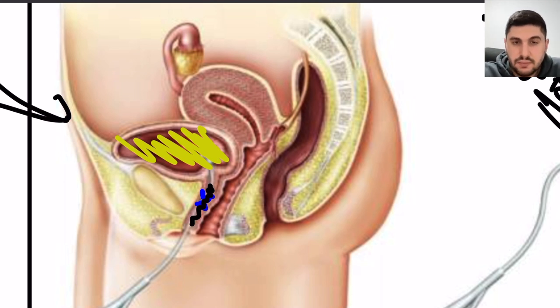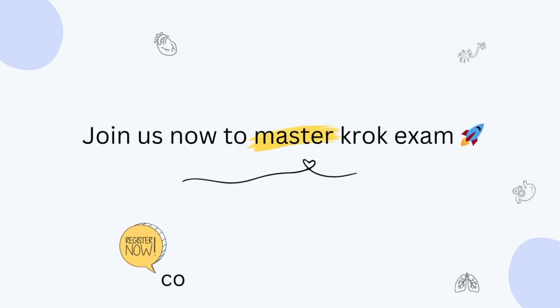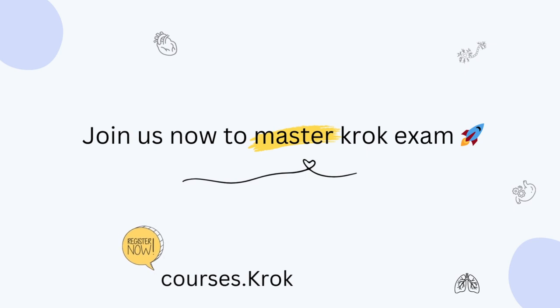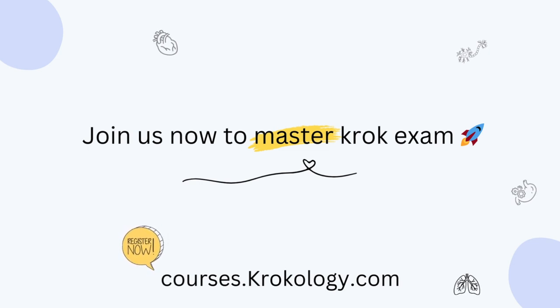Cystostomy is used whenever normal urethral catheterization is impossible due to urethral strictures, tumors, or prostate hyperplasia. That concludes this surgery base explanation. Our course with Crocology covers CROC 2 booklet explanations in the same way. If you like these videos, check out our course starting in January, and follow this channel for more videos.